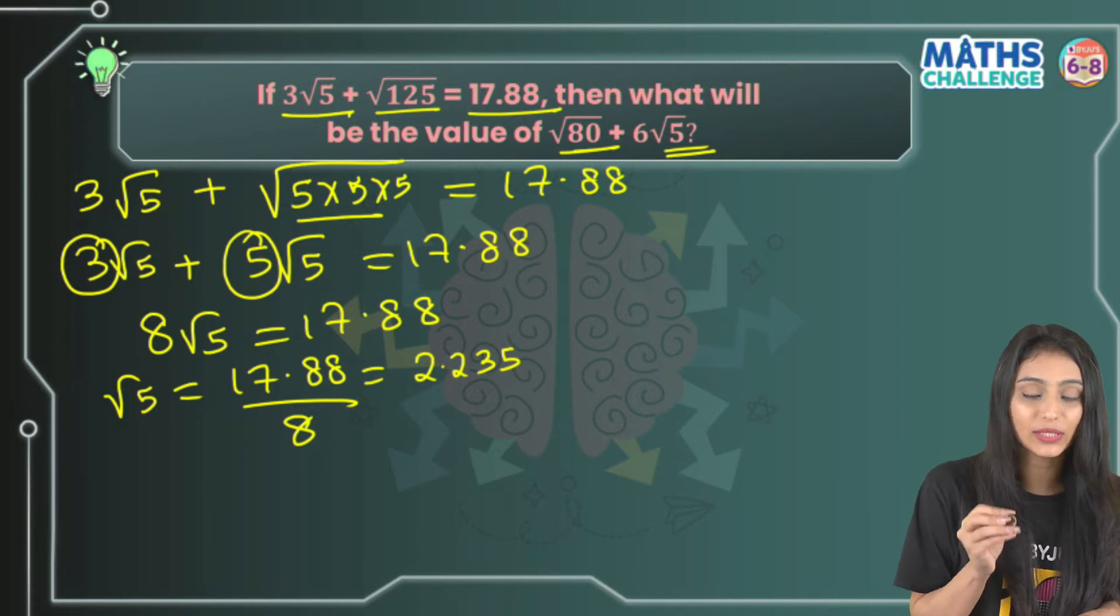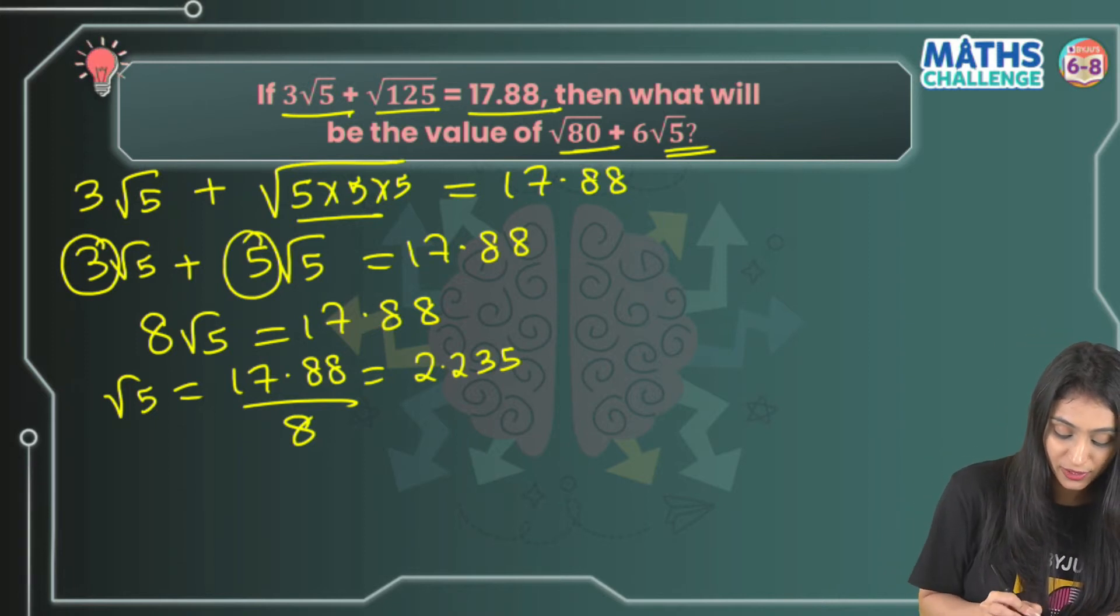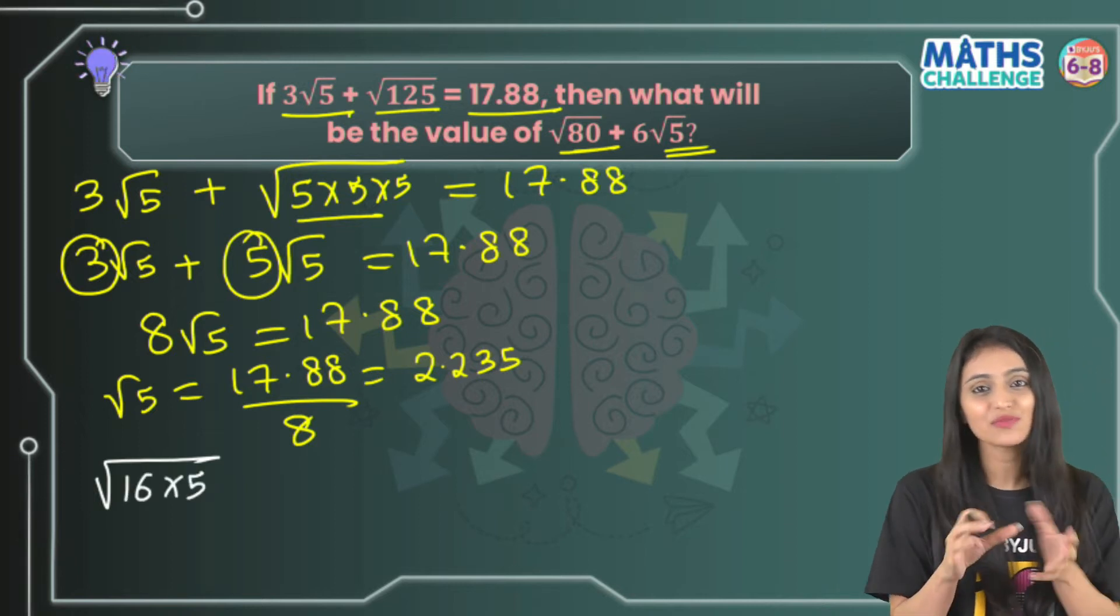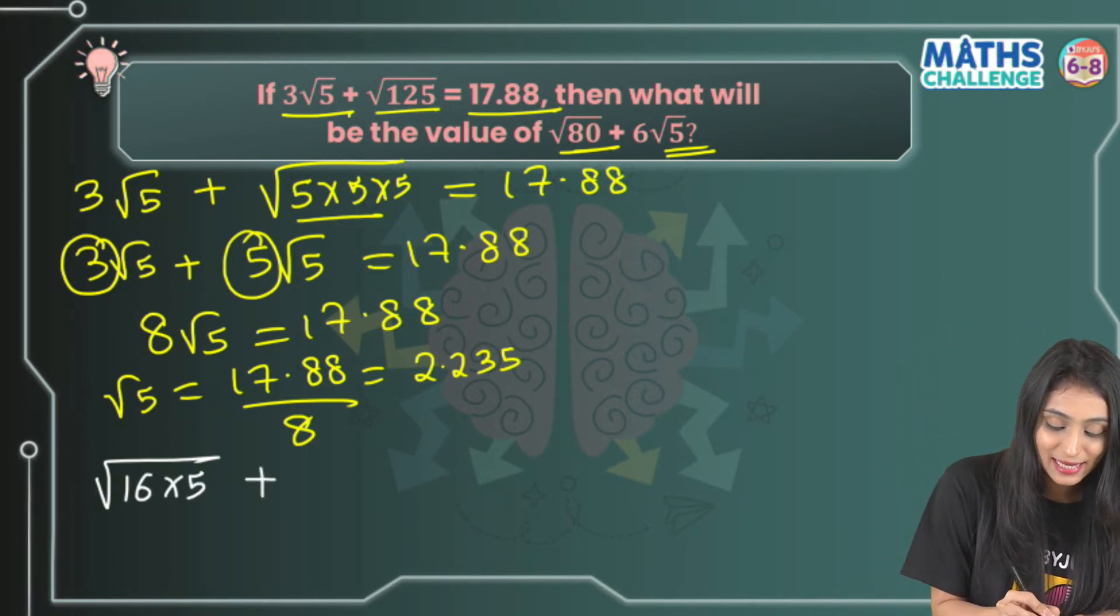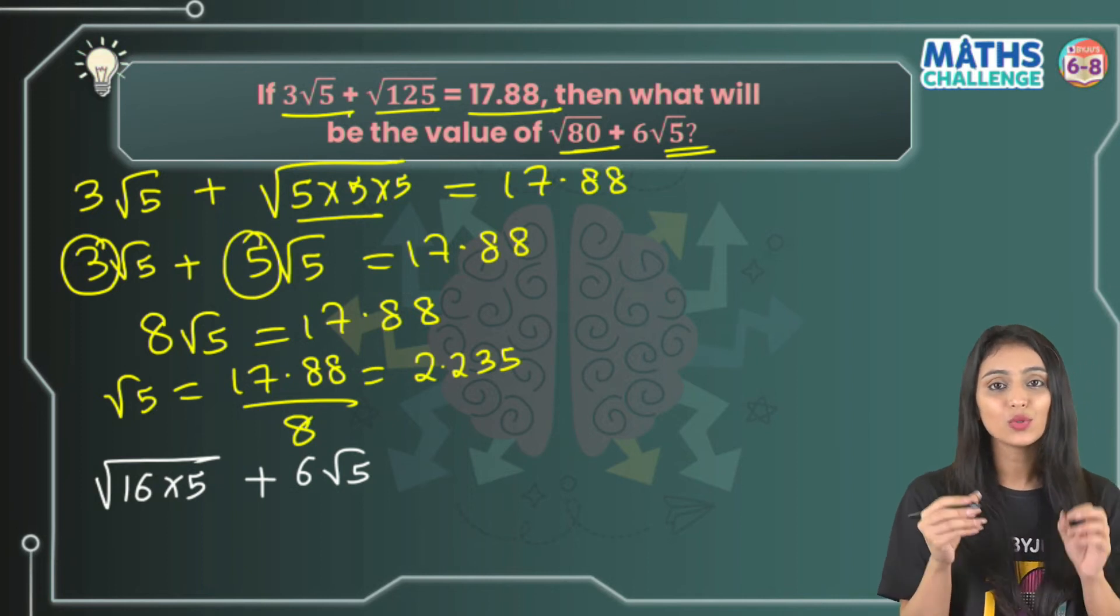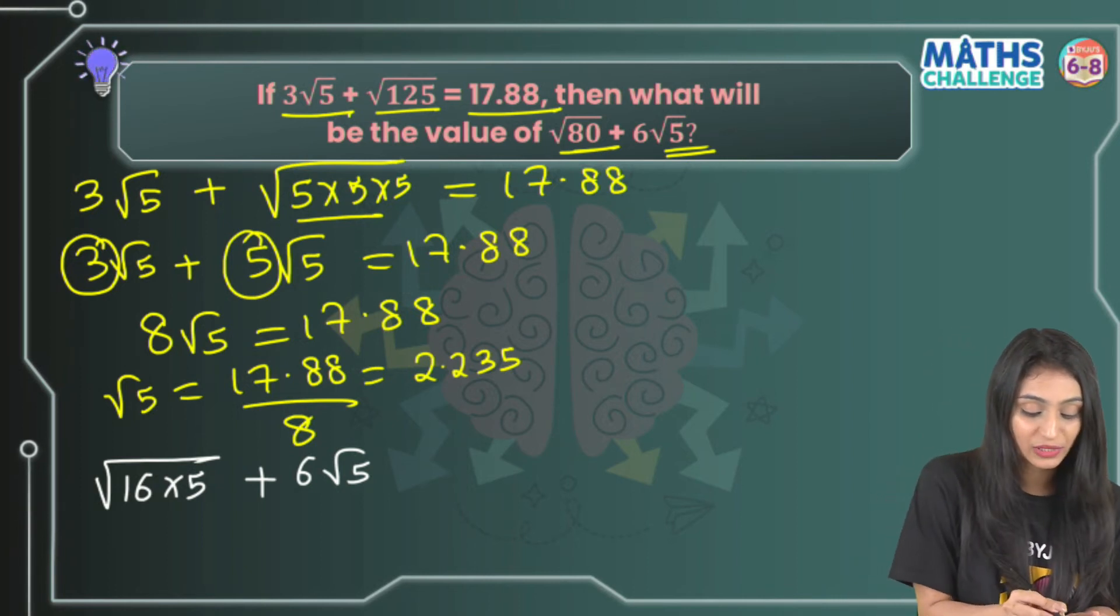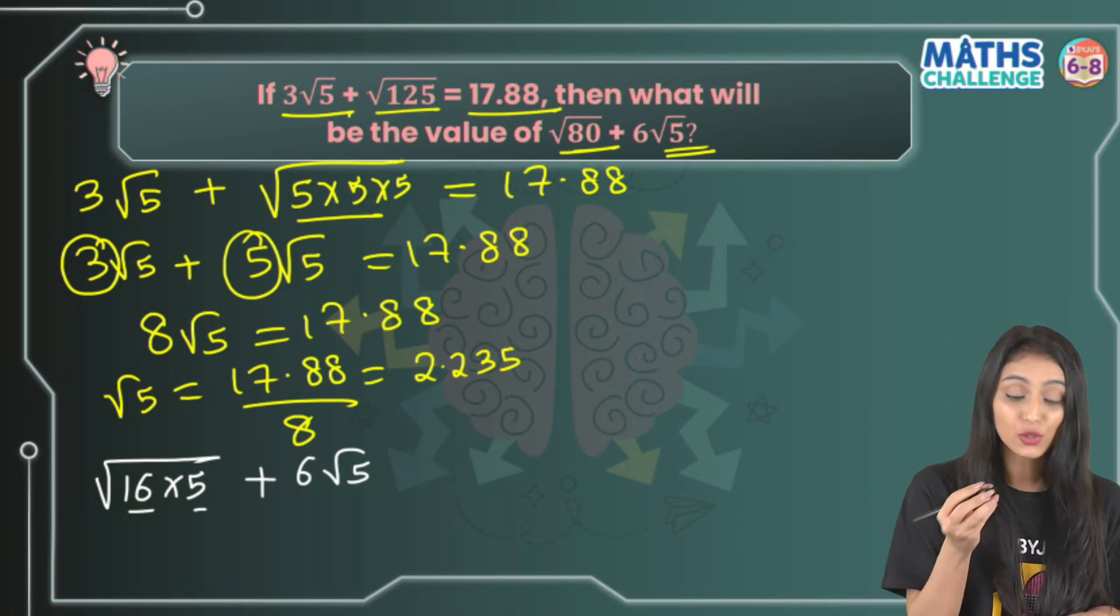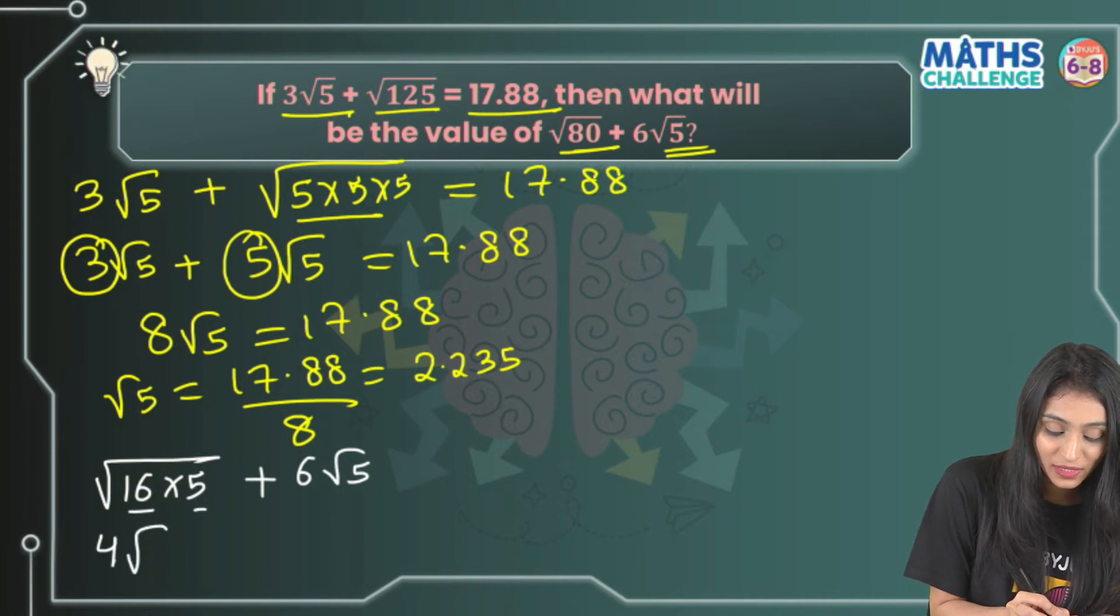√80 can be written as √(16×5), which is basically how we get 80, plus 6√5. The root is common for both 16 and 5. √16 = 4, and √5 remains as is, plus 6√5.